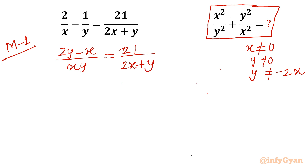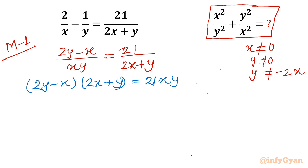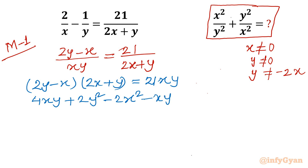Now we can cross multiply the terms. So I will write (2y minus x)(2x plus y) equals 21 times xy. Expanding: 4xy plus 2y² minus 2x² minus xy equals 21xy.